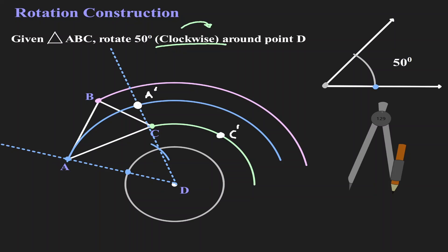Let's understand what we have done. We copied this arc — the measurement of 50 degrees — onto our circle. You can think of the line we just created as the bottom side of my angle, and the line we started with as the upper side of my angle. Now that we have found the image of A, let's clear these marks and concentrate on point B.